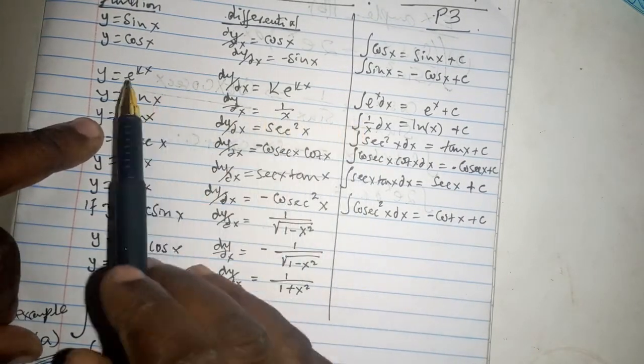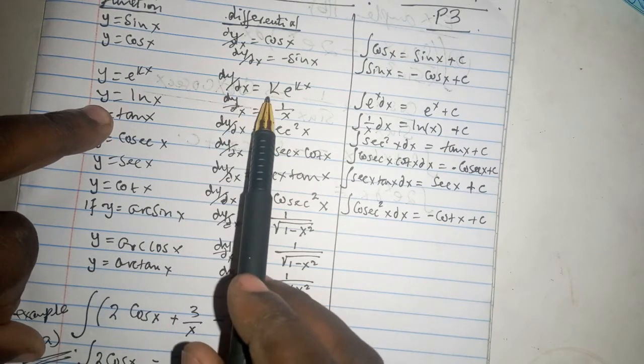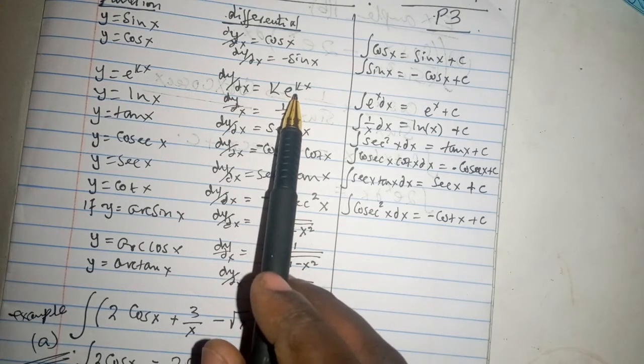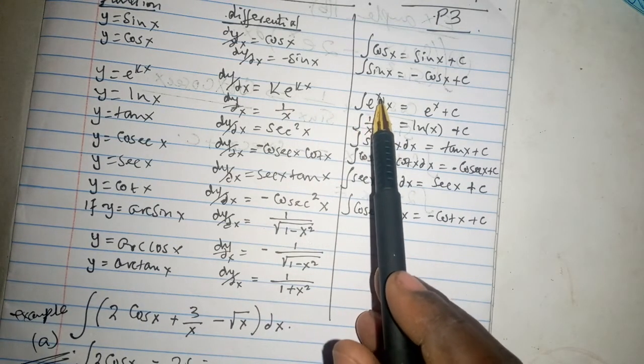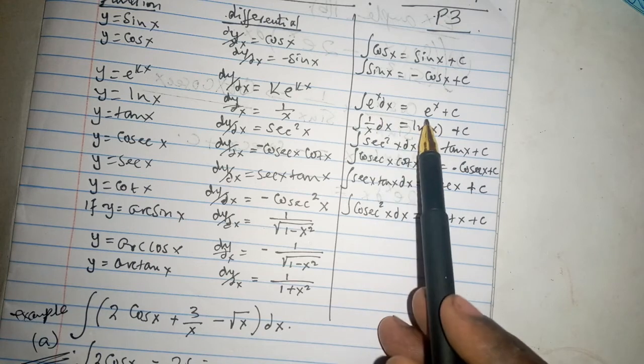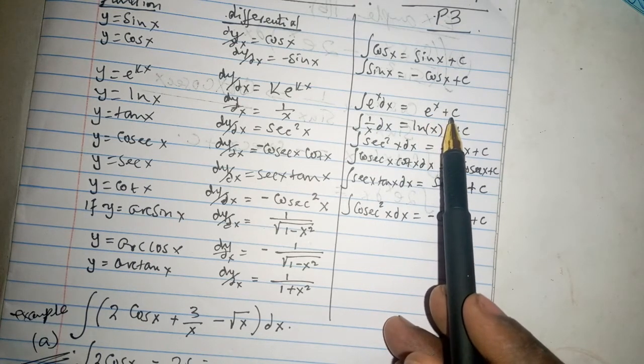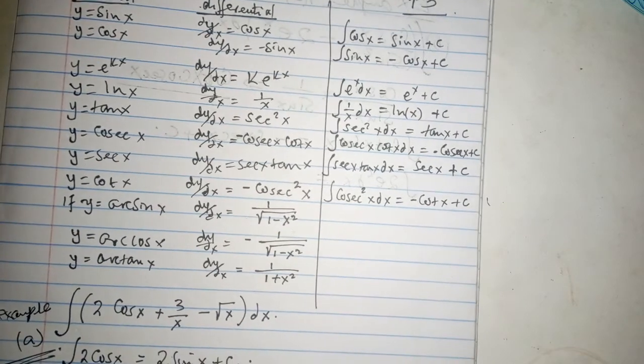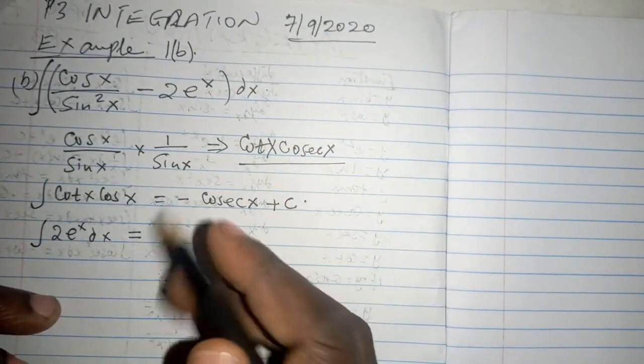But we can also go back to our previous page and see something that we said that if we have y = e^(kx), then dy/dx is ke^(kx). In other words, the integral of e raised to power x with respect to x is the same e raised to power x. Of course, remember to add a constant.